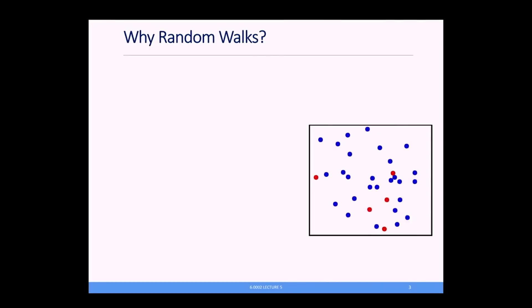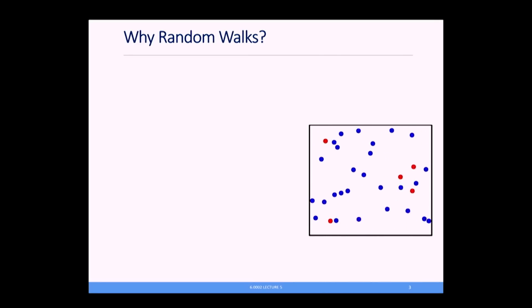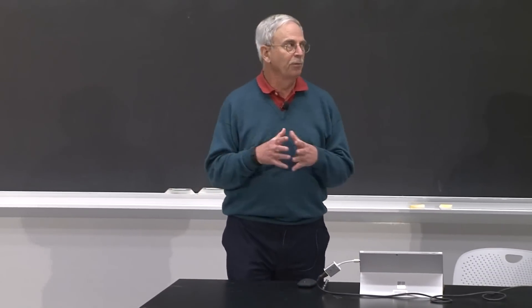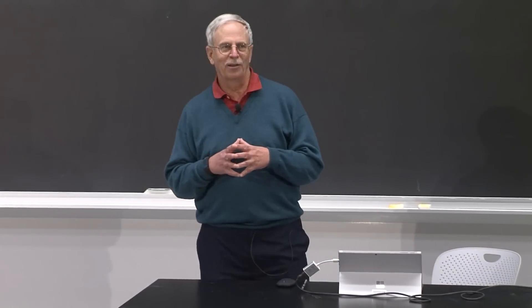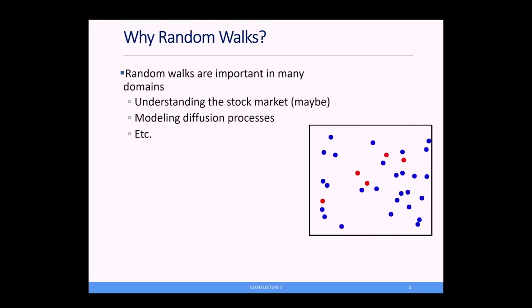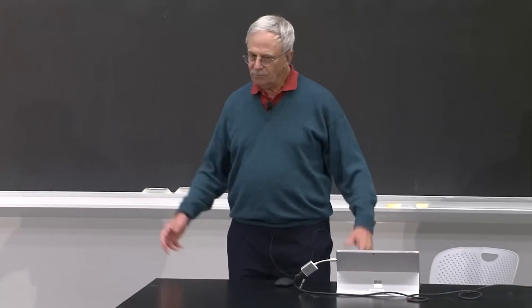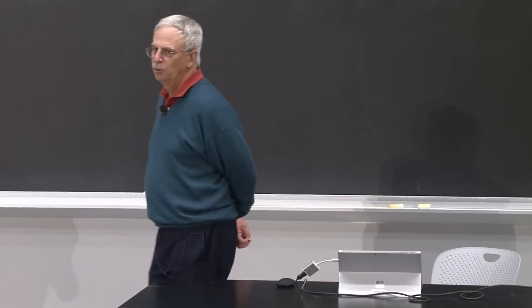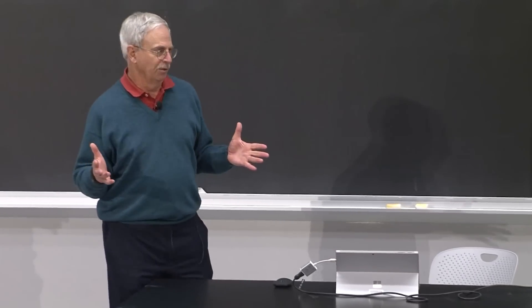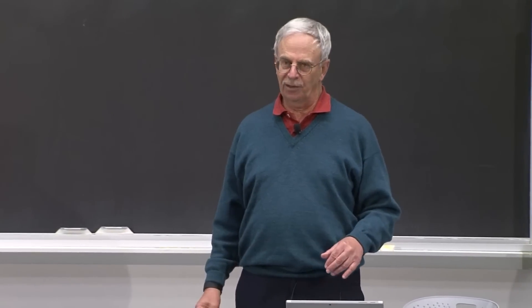Why are we looking at random walks? Here's a picture of molecules just bouncing around — this is actually a picture of what's called Brownian motion, though Robert Brown probably did not discover it. We're looking at random walks because, first of all, they're important in many domains. There are people who will argue that the movement of prices in the stock market is best modeled as a random walk. There was a very popular book called 'A Random Walk Down Wall Street' that made this argument, and a lot of modern portfolio analysis is based upon that. It's also very important in many physical processes — we use random walks to model diffusion, heat diffusion, or the diffusion of molecules in suspension. So they're very important in a lot of scientific and social disciplines.